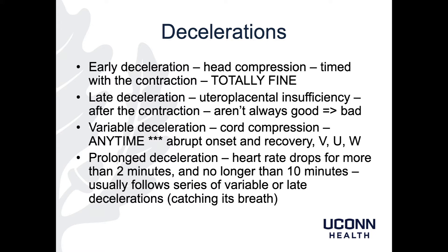Variable decelerations are very obvious. They are caused by cord compression, and they have nothing to do with timing. So a variable can happen at any time — before a contraction, during a contraction, after a contraction, or in the absence of contractions, as long as that cord is being compressed. The way you can tell it's a variable: it has an abrupt onset, an abrupt recovery, and variable decelerations tend to look like the letters V, U, and W.